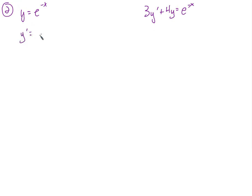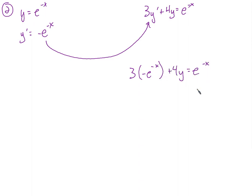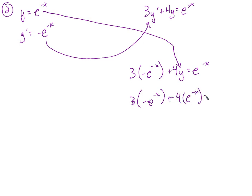First, let's take the derivative. y prime equals negative e to the negative x. We're going to take this and substitute it for y prime: 3 times negative e to the negative x plus 4y equals e to the negative x. There are a lot of e to the negative x terms involved, so let's go ahead and make the substitution for y as well. That gives us negative 3e to the negative x plus 4e to the negative x equals e to the negative x. And 4e to the negative x minus 3e to the negative x is e to the negative x.